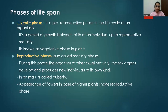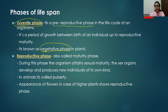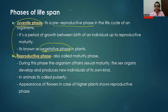The first phase of life span is juvenile phase, a term used for animals. For plants, we use the term vegetative phase. Juvenile phase is also known as pre-reproductive phase because it comes before the reproductive phase in the life cycle of an organism. During juvenile phase, the complete growth of an individual occurs.